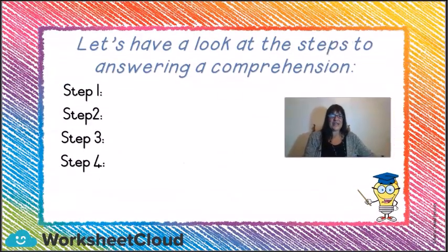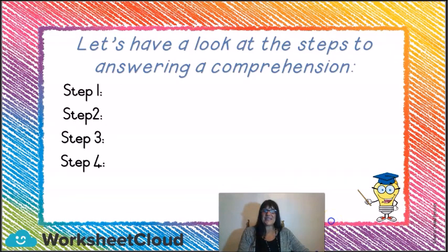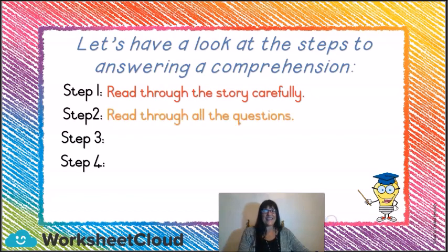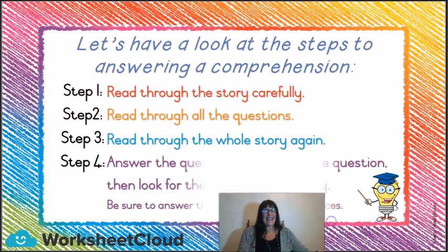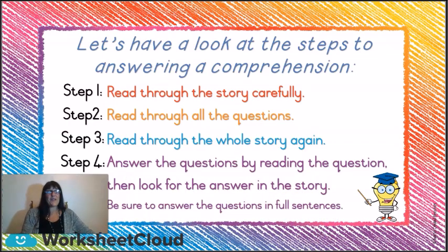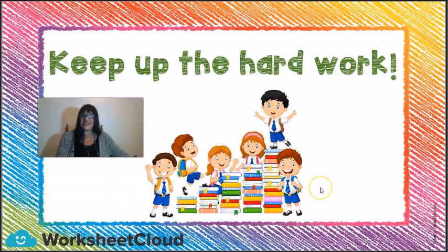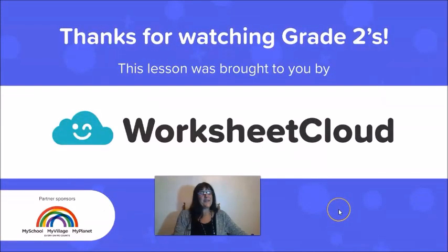So children, just to recap how to do a comprehension: step number one — read through the story carefully. Step number two — read through all the questions. Step number three — read the whole story again. And step number four — answer the questions by reading the question, then look for the answer in the story. Be sure to answer the questions in full sentences. I am so proud of you — thank you for answering with me today. And remember, if it's your birthday, I hope you're having a fantastic day. From Mrs Greenwood, thank you for watching. The lesson was brought to you by WorksheetCloud.com. Have a wonderful day. Bye-bye.